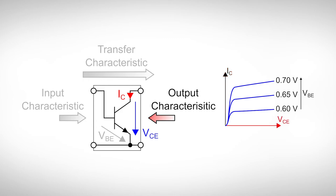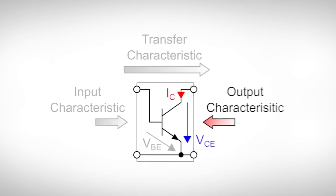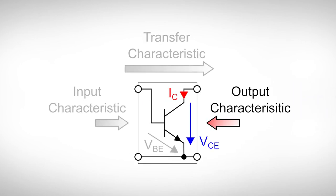But as we have seen before, the collector current is also a strong function of either base current IB or base emitter voltage VBE. So, depending on what base current or base emitter voltage we use, the output characteristic will look differently.